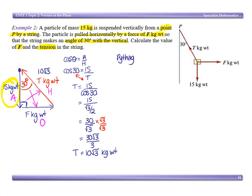So let's use Pythagoras: c squared is a squared plus b squared. 10 root 3 all squared is going to be 15 squared plus our force squared. So our force squared is going to be 10 root 3 all squared minus 15 squared.